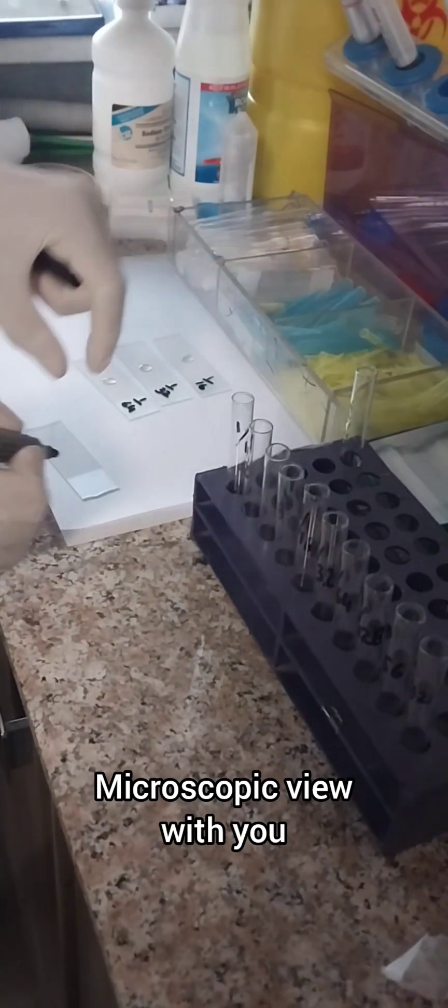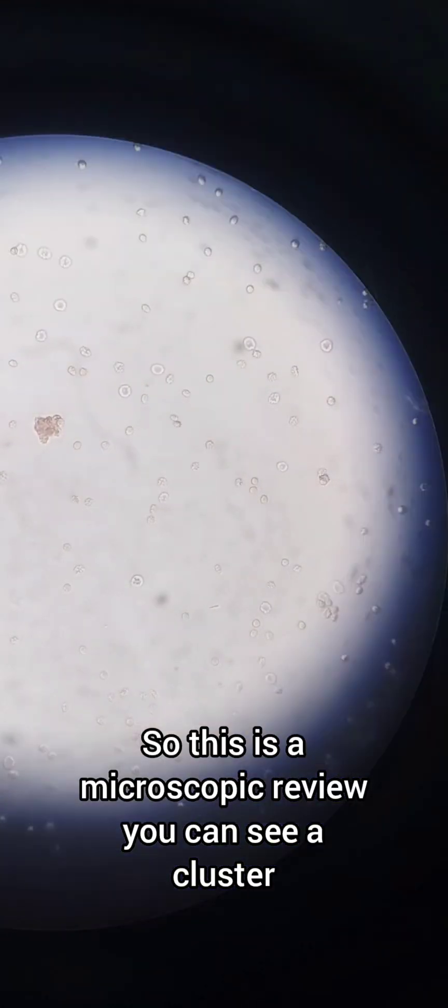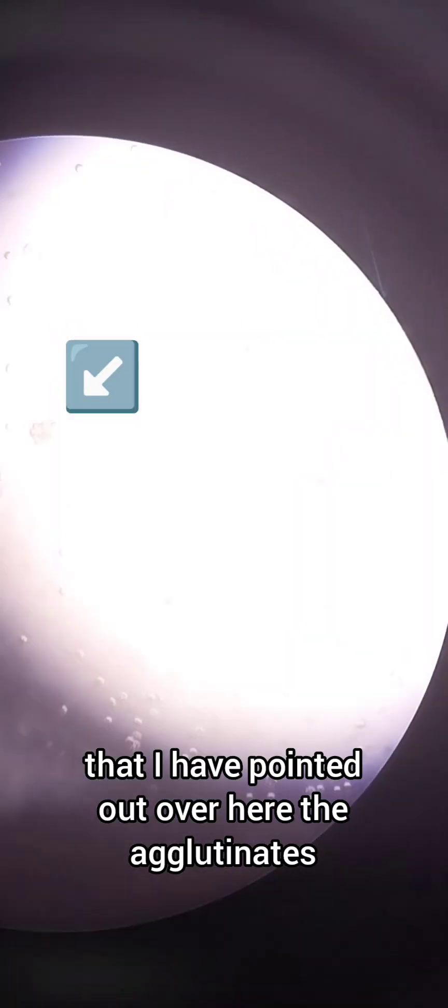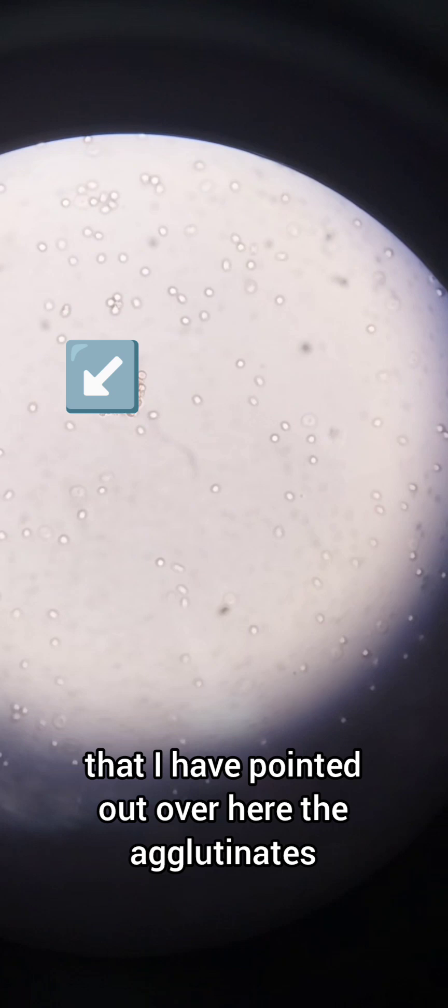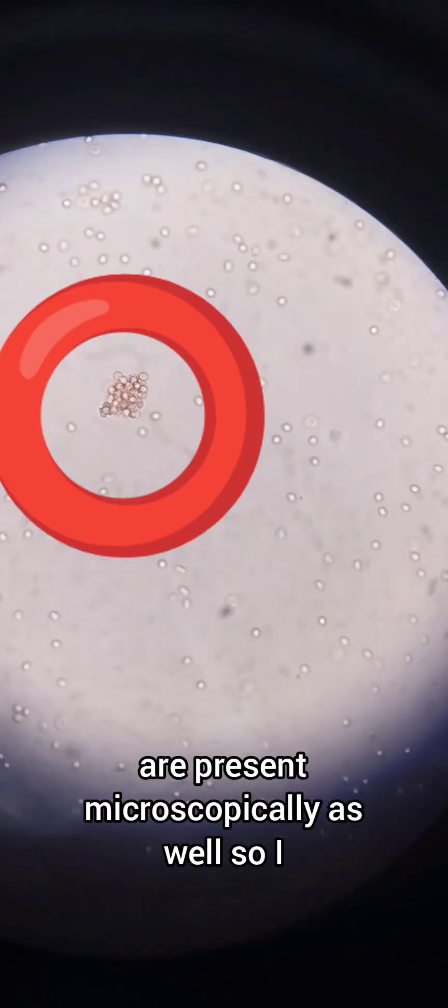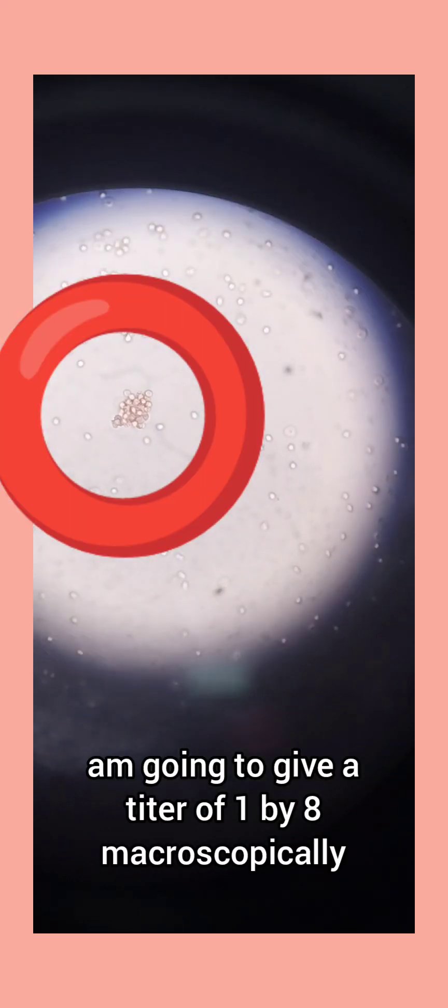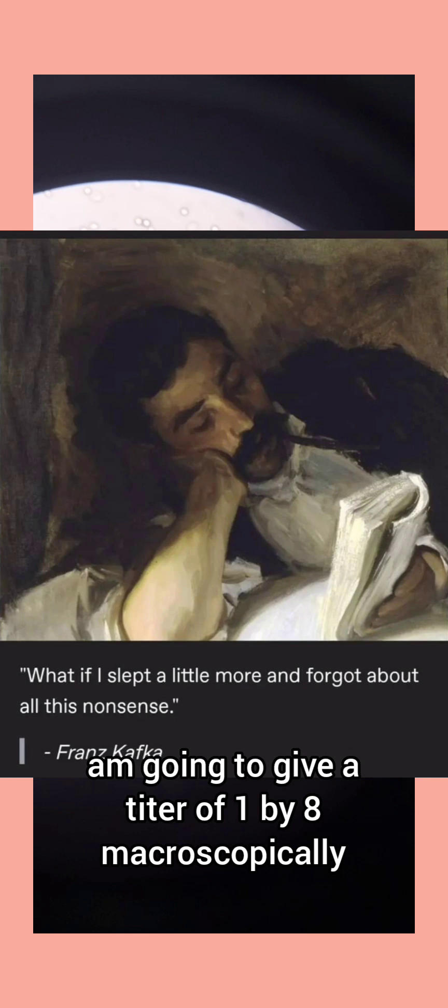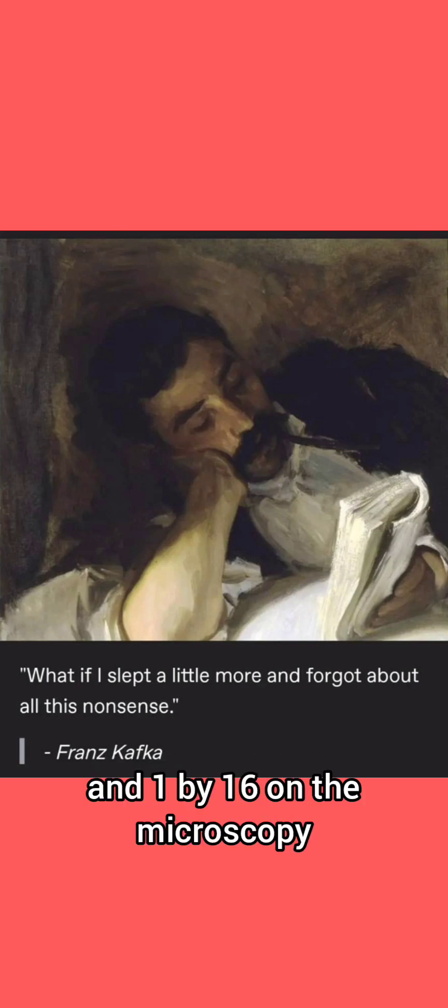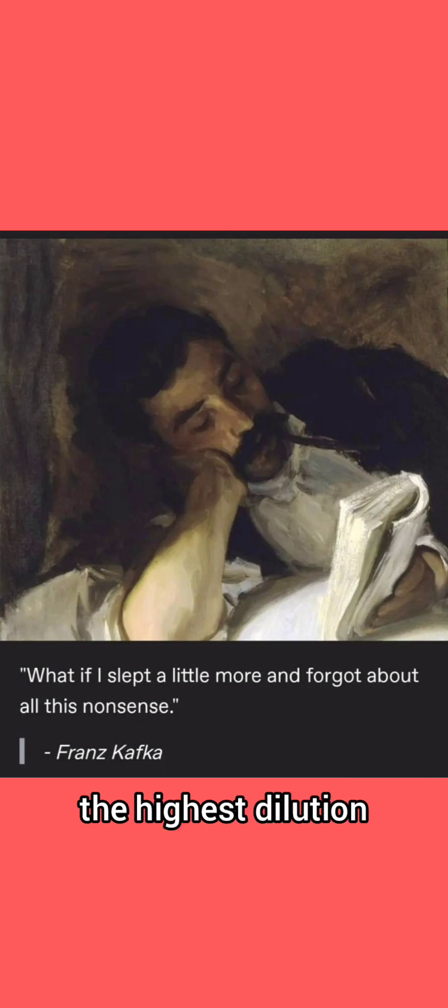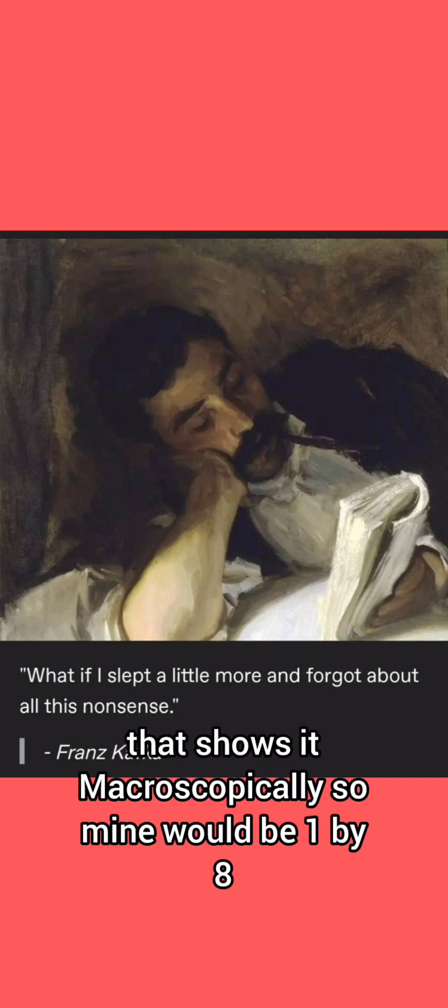This is the microscopic view. You can see a cluster that I have pointed out over here. The agglutinates are present microscopically as well. So I am going to give a titer of 1:8 macroscopically and 1:16 on the microscopy. Some books recommend that you should show the final titer as the highest dilution that shows it macroscopically, so mine would be 1:8.